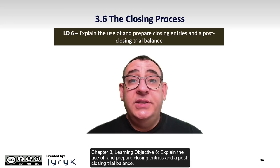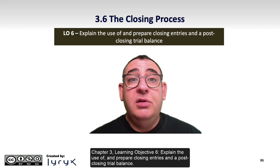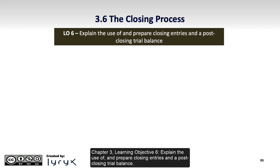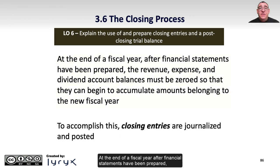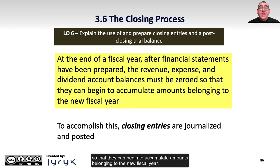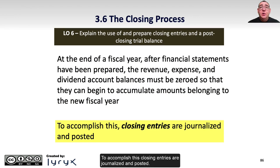Chapter 3, Learning Objective 6: Explain the use of and prepare closing entries and a post-closing trial balance. At the end of a fiscal year, after financial statements have been prepared, the revenue, expense, and dividend account balances must be zeroed so that they can begin to accumulate amounts belonging to the new fiscal year. To accomplish this, closing entries are journalized and posted.